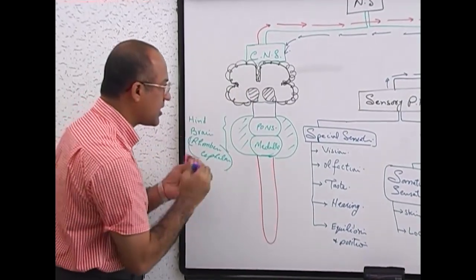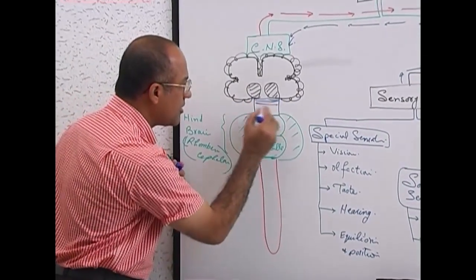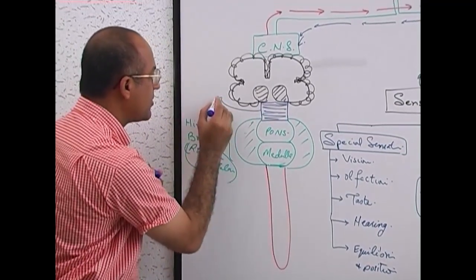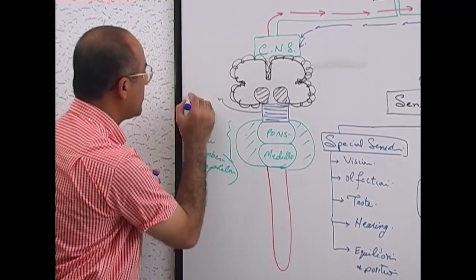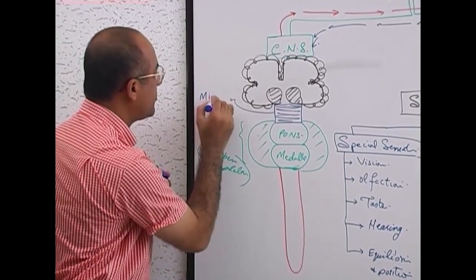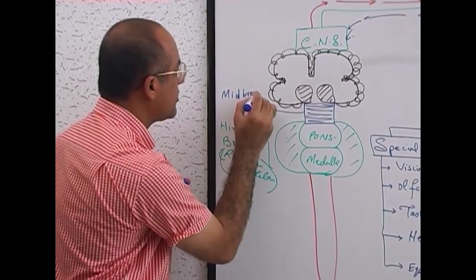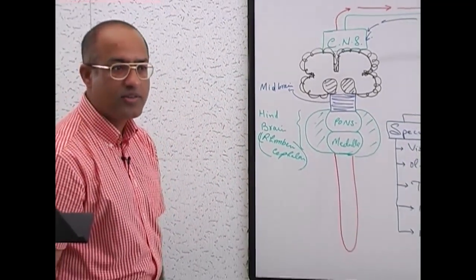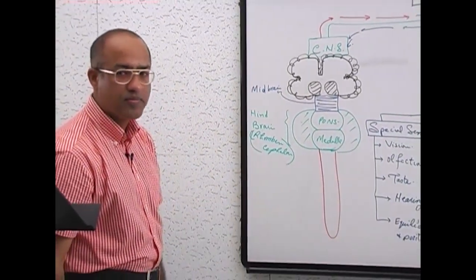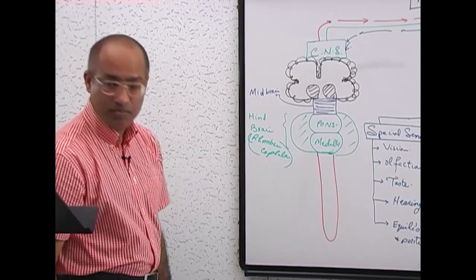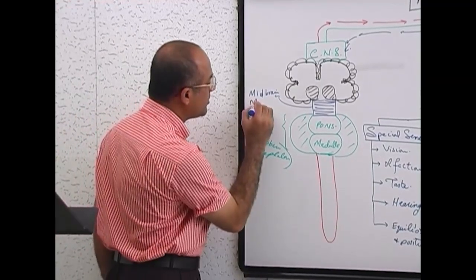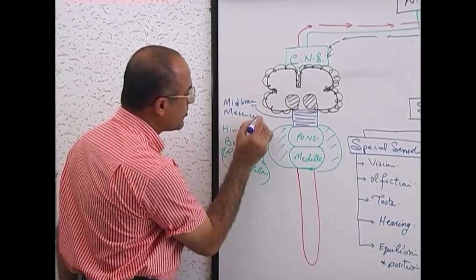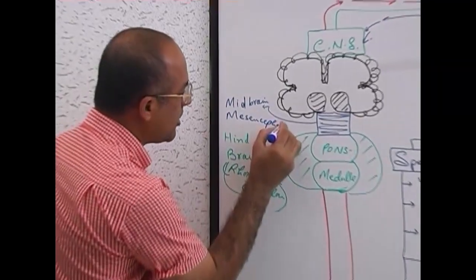In between the hindbrain and forebrain we have this structure, which is called the midbrain. Another name for the midbrain is mesencephalon. That's very good — mesencephalon.